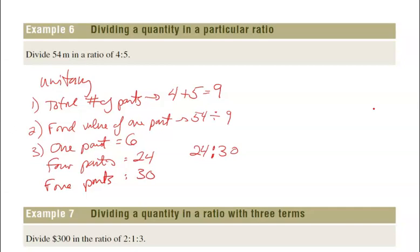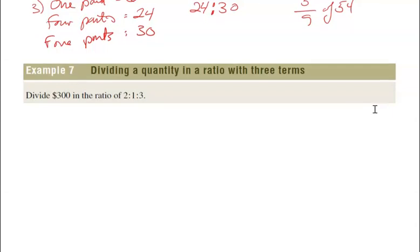If we were going to use the fraction method, I'm not going to go through and work it out, but we would work out 4 ninths of 54, and of becomes times, and then 5 ninths of that same amount. And we will come out with our calculator. If we did 5 divided by 9 times 54, we should come out with 30. There's two different ways to do it.